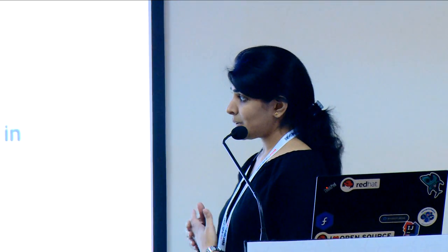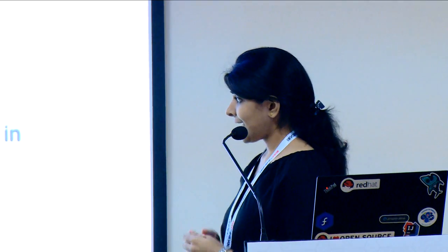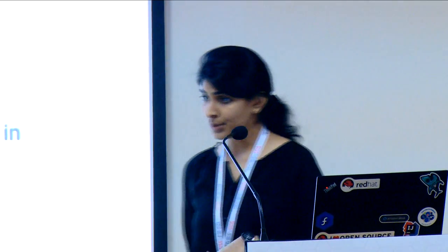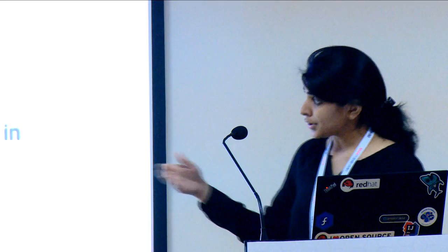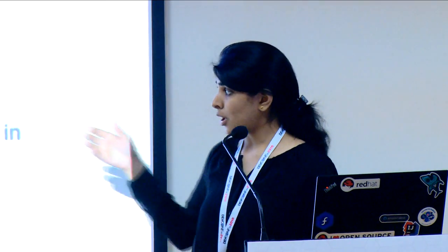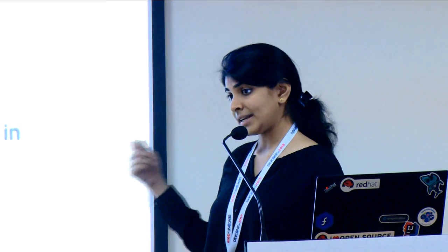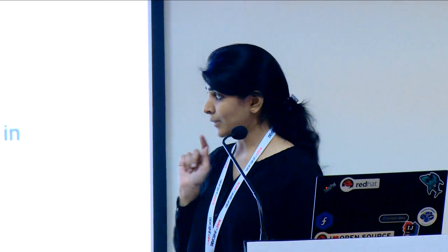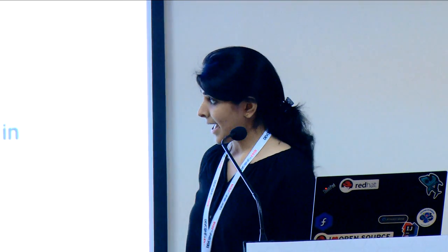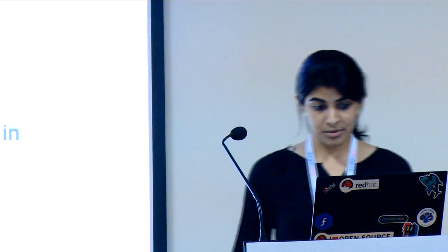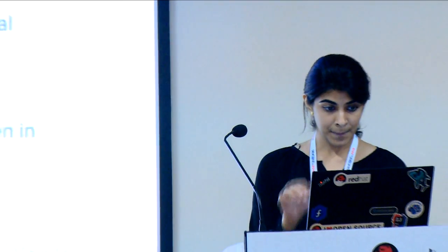Another thing Prow does is respond to a lot of GitHub events. There could be timers for periodic events and a lot of manual commands available that trigger jobs and add labels. So you do not have to manually go and add those to your repository — you can run simple commands and that will do it for you.